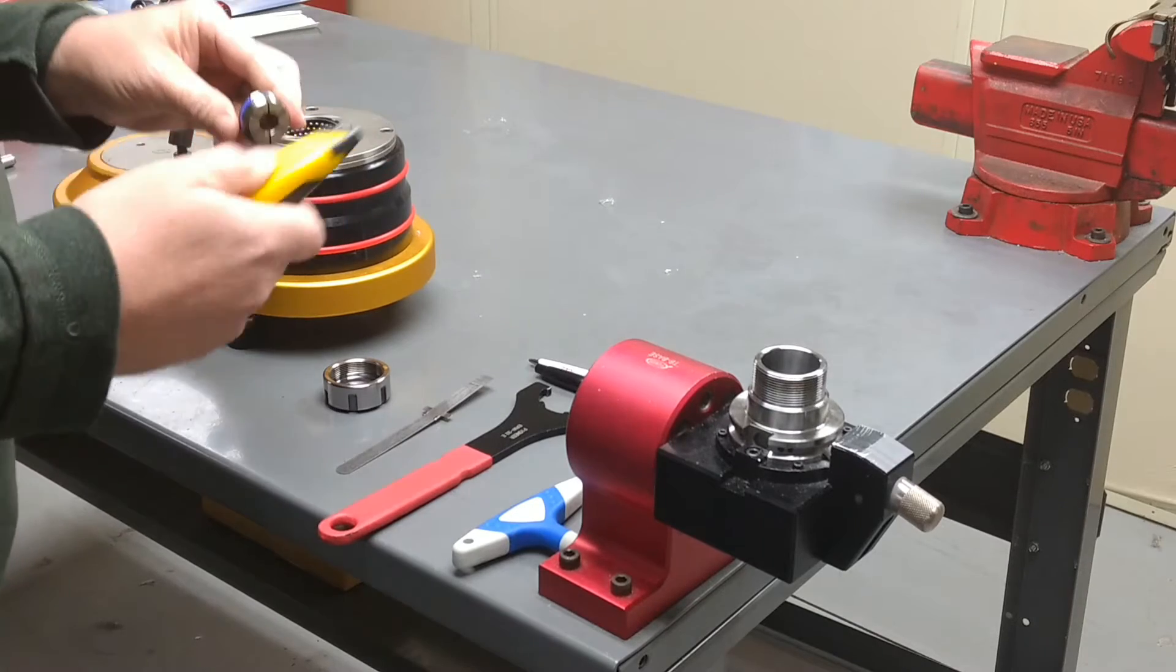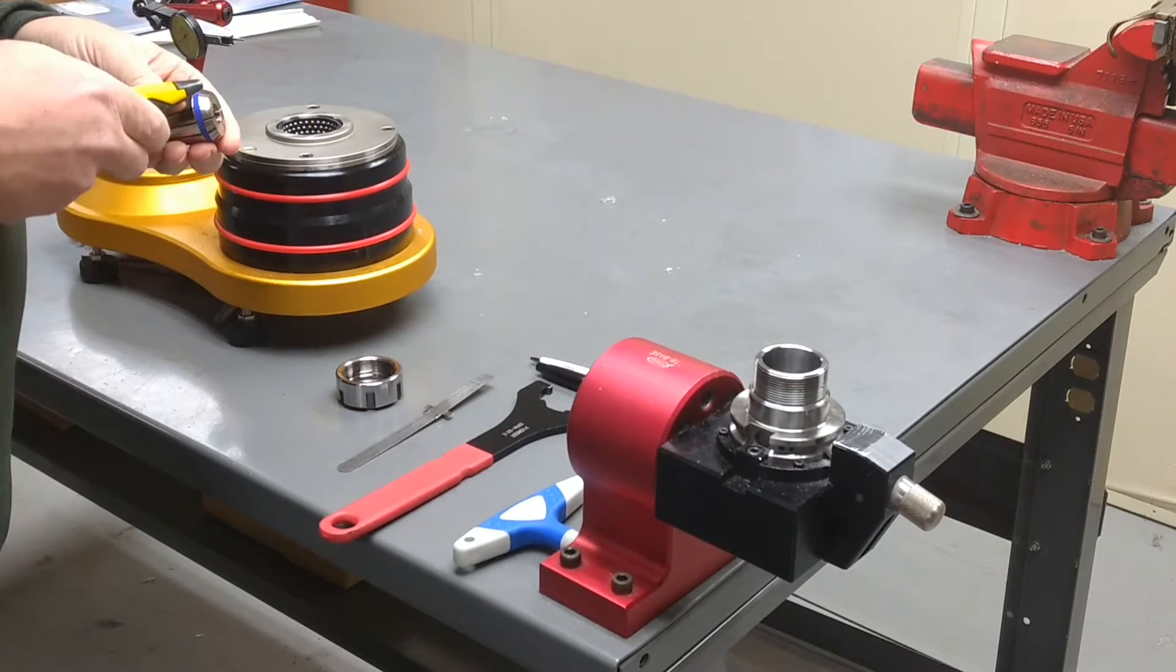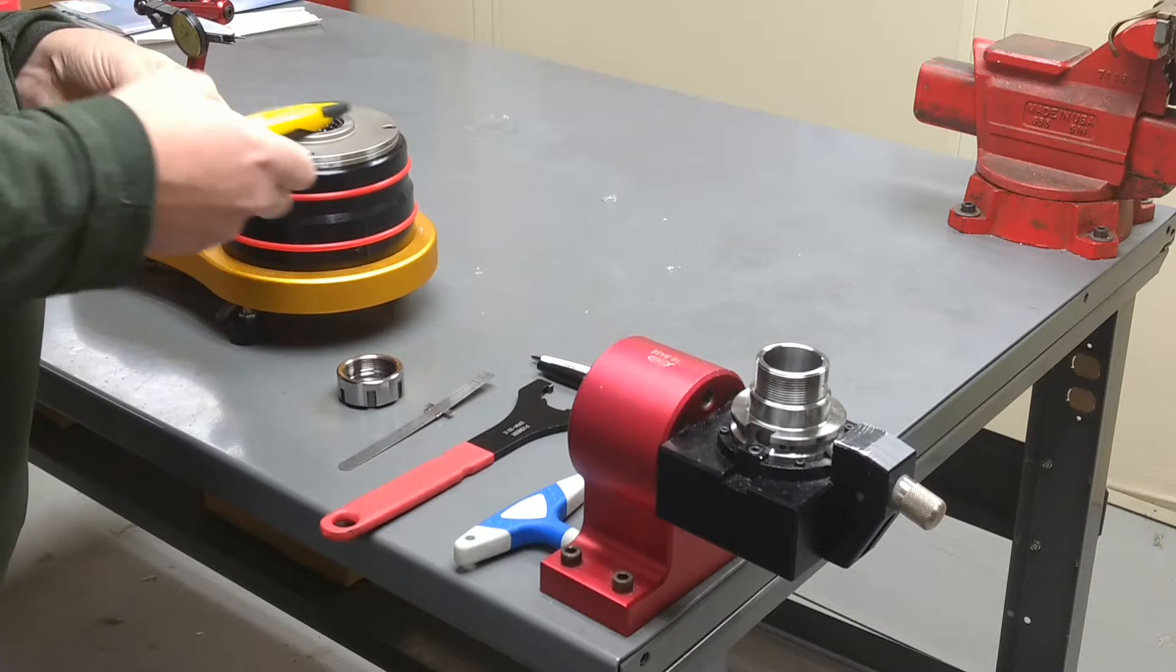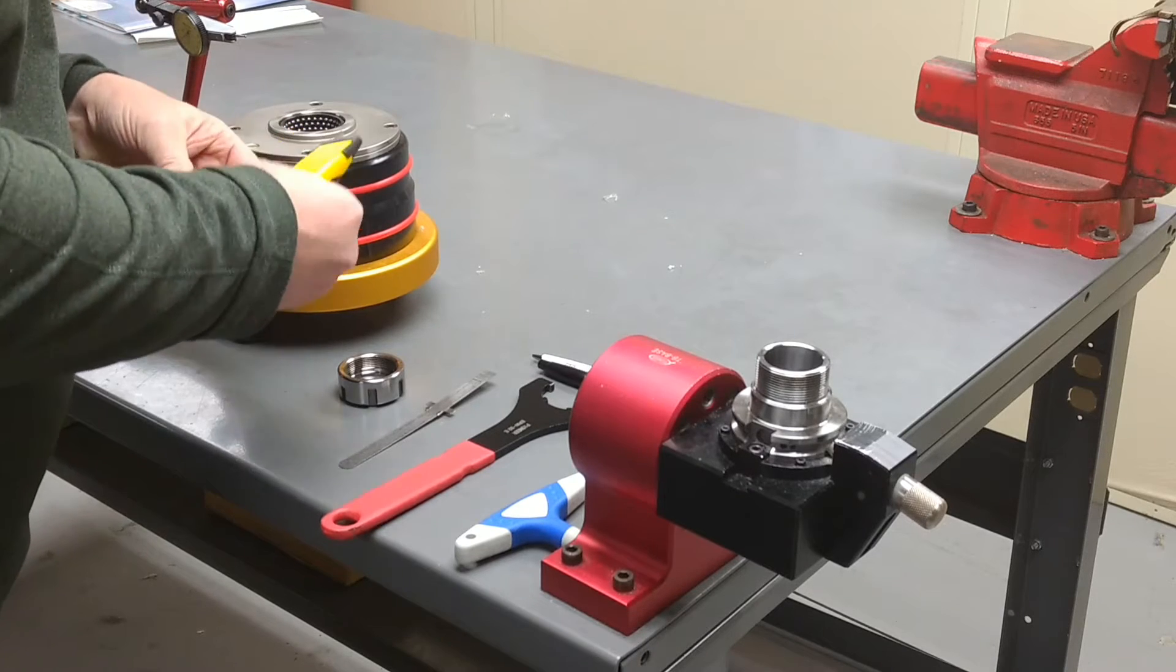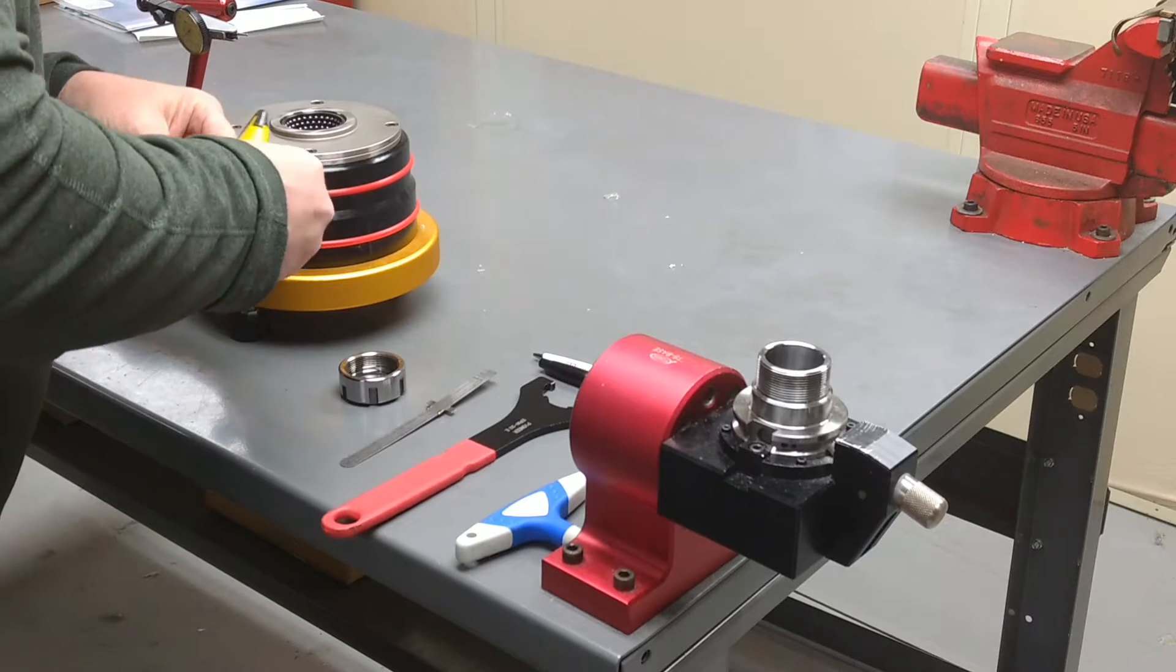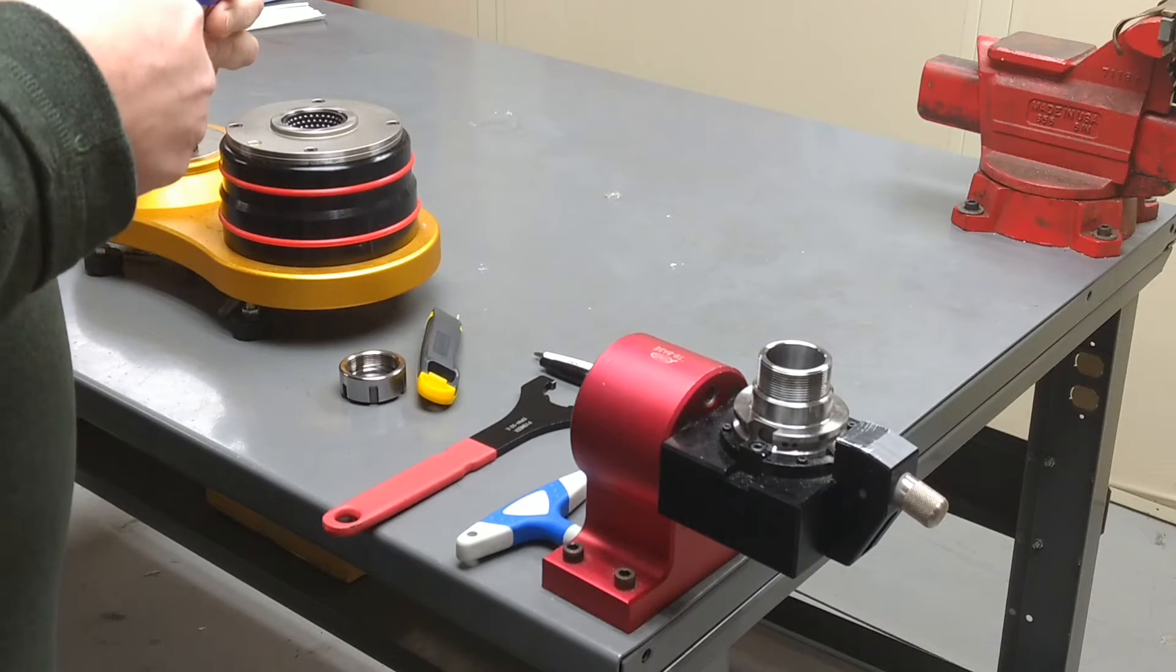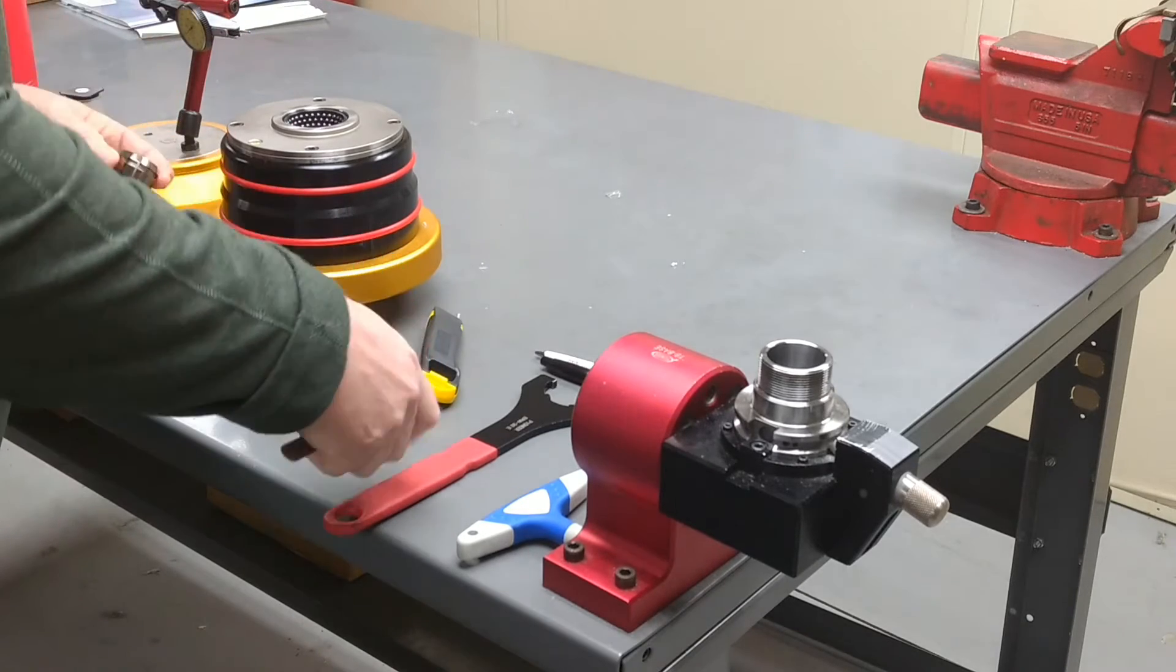So handy dandy razor blade, cut through it, and it comes right out. Well you think it would come out. Partially it's me not doing this right here so there we go. So the blue ring is out.